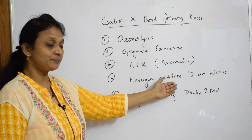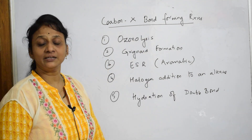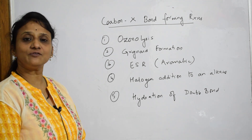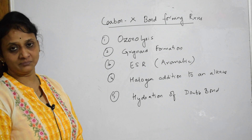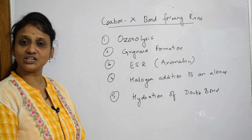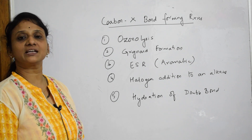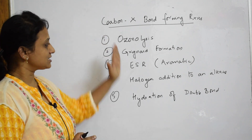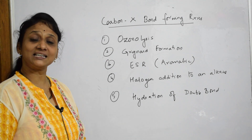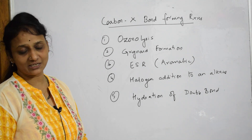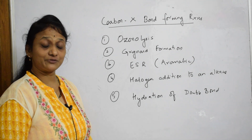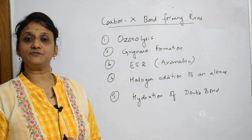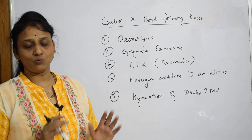Also under carbon-X bond formation: halogen addition to an alkane, where halogen (X) is added; and hydration of a double bond, where we add water across the double bond — hydration of an alkene, which is also important in Grade 12. So these are the reactions in the second category of the organic toolbox. The last category is functional group interconversion reactions.